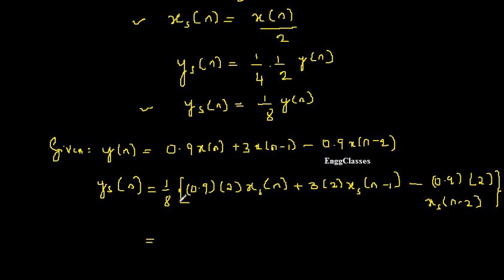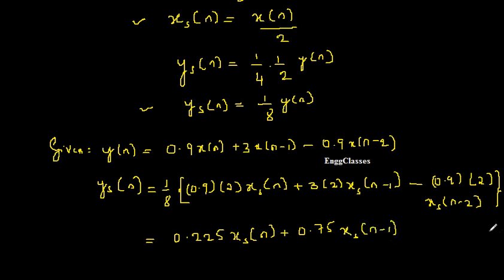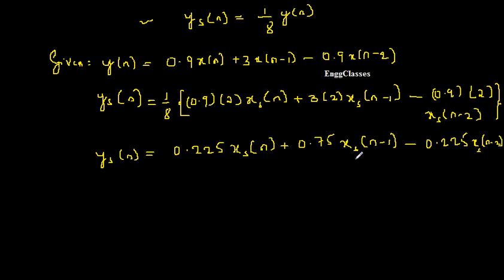Simplifying: 0.9×2 divided by 8 = 0.225, giving 0.225·Xs(n). Then 3×2 = 6 divided by 8 = 0.75, giving 0.75·Xs(n−1). And 0.9×2 divided by 8 = 0.225, giving 0.225·Xs(n−2). So the new difference equation is Ys(n) = 0.225·Xs(n) + 0.75·Xs(n−1) − 0.225·Xs(n−2). I just have to implement it using the direct form 1 structure.